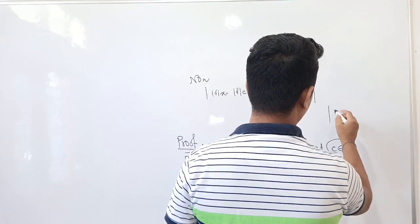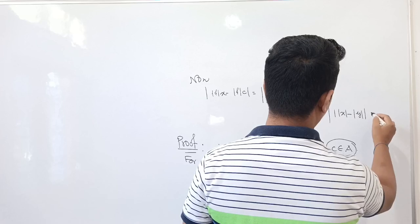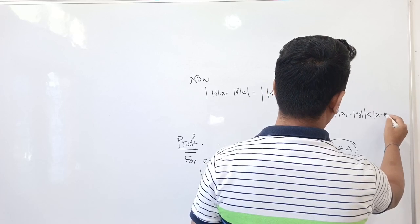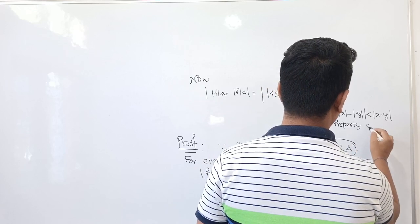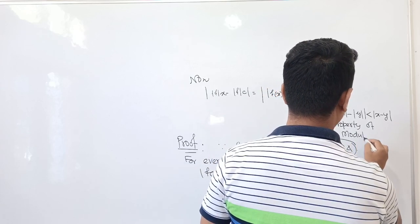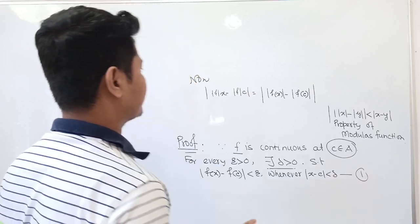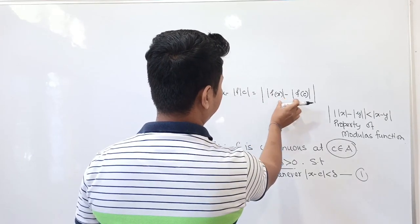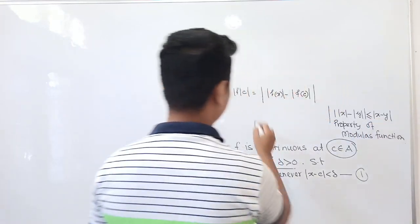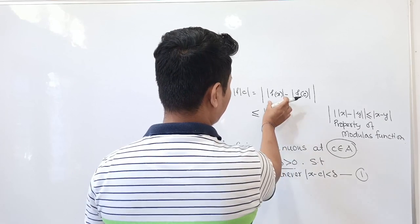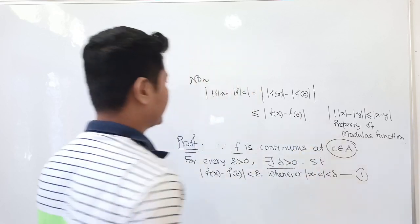The property of modulus function states: mod of mod x minus mod y is less than or equal to mod of x minus y. So mod of mod f(x) minus mod f(c) is less than or equal to mod of f(x) minus f(c). This uses the property of the modulus function.